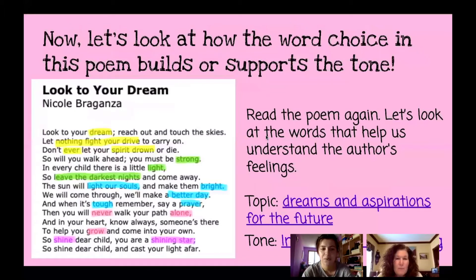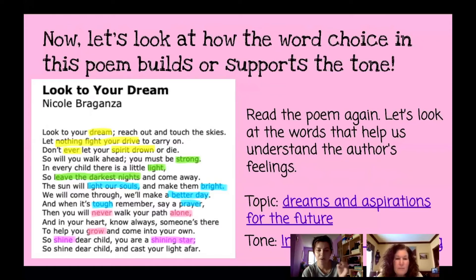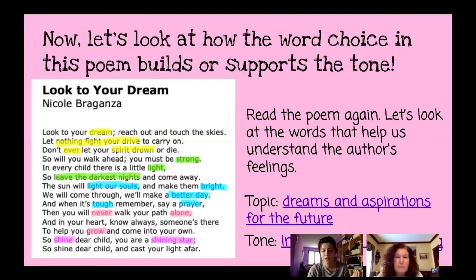So now we are going to read through the poem a second time and look at how the word choice in this poem builds or supports the tone. When you are trying to figure out what the tone of a poem is, there are two different ways you can do it. You can start by reading it and picking out certain words that you think go together and show they have a connection and help lead you to what the tone is. Or after you read it through, you might already have a sense of what the tone is based on how the poem made you feel, and then you can go back and pick out certain words that support that tone.